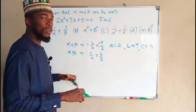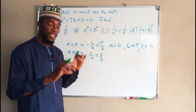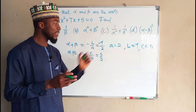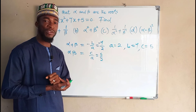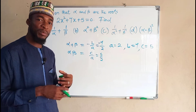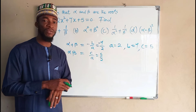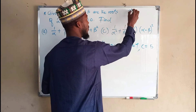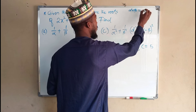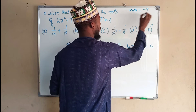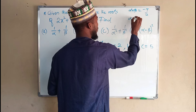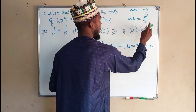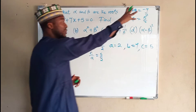We substitute into these two equations to obtain the sum and the product of roots. From the first one we have negative b, meaning negative 7 over a which is 2, giving us negative 7 over 2. For the product we have c over a which is 5 over 2. So the sum of the roots is negative 7 over 2 and the product is 5 over 2. We will be using these throughout.